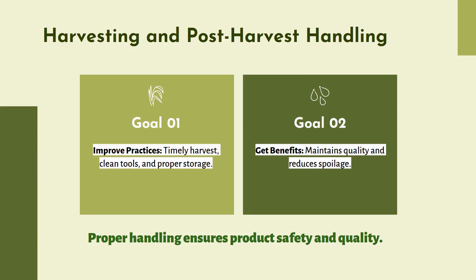There are a few processes involved in farming that must be taken care of. One critical stage is harvesting and post-harvest handling. The goal is to improve practices like harvesting timely using clean tools, and proper storage should be done — maintaining proper temperature and environment. Another goal is to maintain quality and reduce spoilage. Using clean tools and storing food properly will improve product quality, reduce spoilage rate, and increase profit. Proper handling ensures product safety and quality.